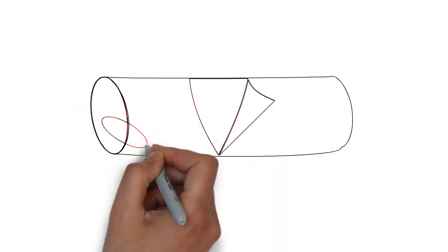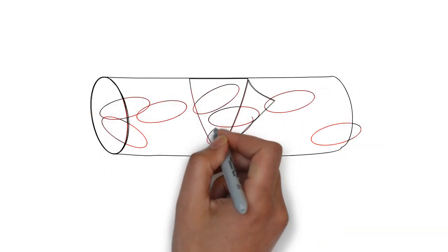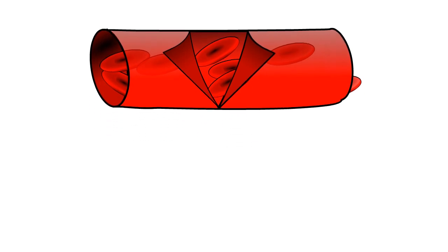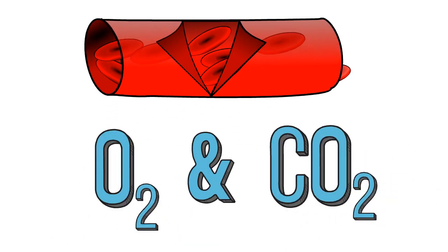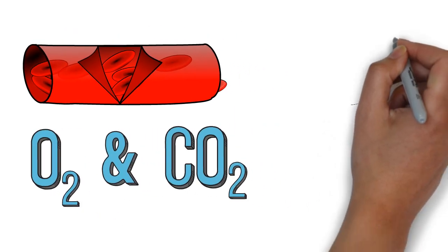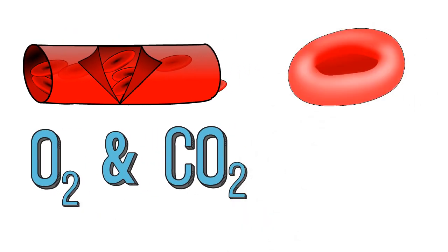The major function of our red blood cell is to transport respiratory gases like oxygen and carbon dioxide. But the important point here is the RBC cannot utilize the oxygen it carries.